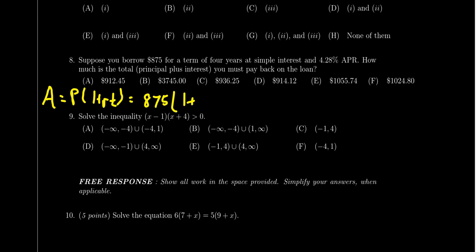One plus the rate. This was a percentage. We need to write it as a decimal here, 0.0428. And then you times that by the years, which is four.